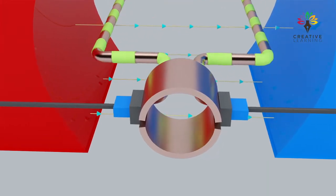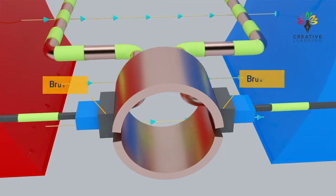This induced current flows through the armature windings and is collected by stationary contacts called brushes.